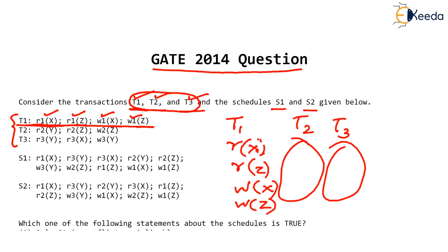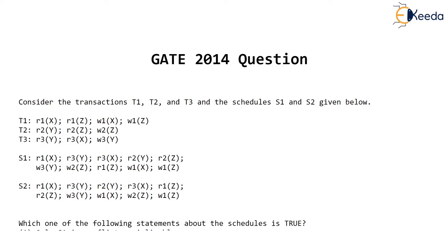Now let's talk about the schedules given. The two schedules are S1 and S2. Let's see how you can view S1.